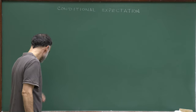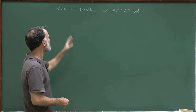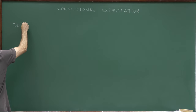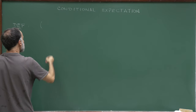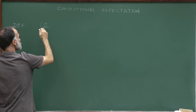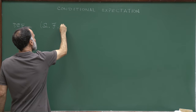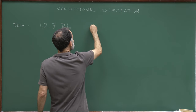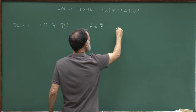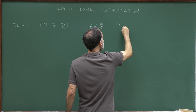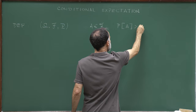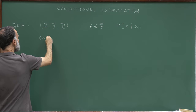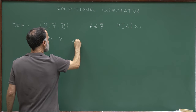With this lecture, we start an entirely new subject: Conditional Expectation. Let me start with some definitions. We will be working in a probability space — a set omega, a sigma algebra F, and a probability P defined on this sigma algebra. I will fix an element A in F, and define the Conditional Probability given A.